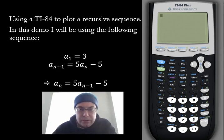So a₁ is equal to 3, that's our initial value in the sequence, and then we have the (n+1)th term is going to be equal to 5 times the nth term minus 5.